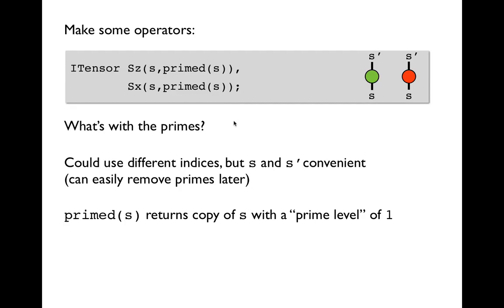So what is the meaning of this primed function? Well we could have just used two different indices. We could have made a new index, say called t, that had the same size as s, so that we get a two by two matrix for Sz and Sx, and that would have been fine, but an easier convention is to use s both as the row and the column indices, if you will, for these matrices.